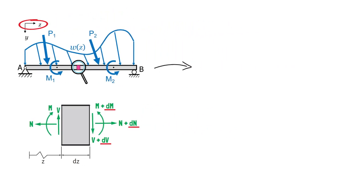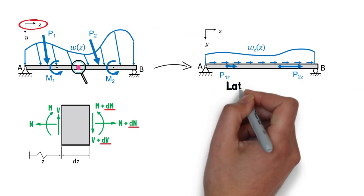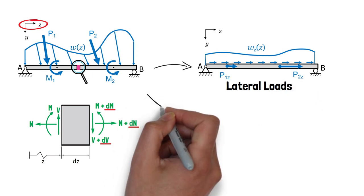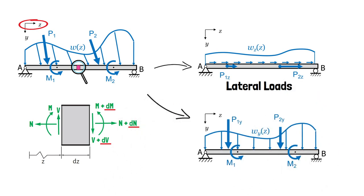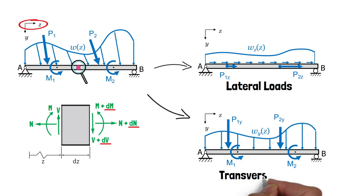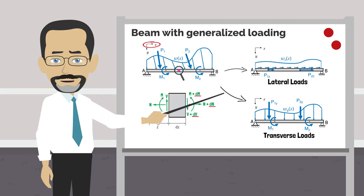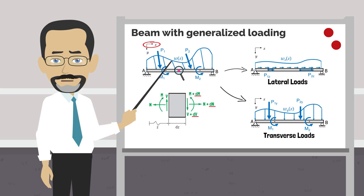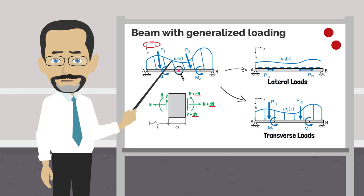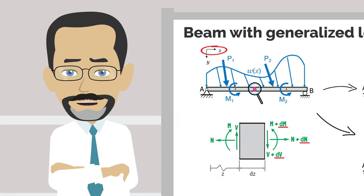To make it easier to visualize, we can break up these generalized loads into components parallel to the beam, which we will call lateral loads, and components perpendicular to the beam, which we will call transverse loads. We include the moments in our transverse loads, as the vector direction of the moment couples are perpendicular to the beam. Note that we are drawing all applied loads acting on the beam in the positive coordinate directions, and the relationships we derive will be dependent on this convention.